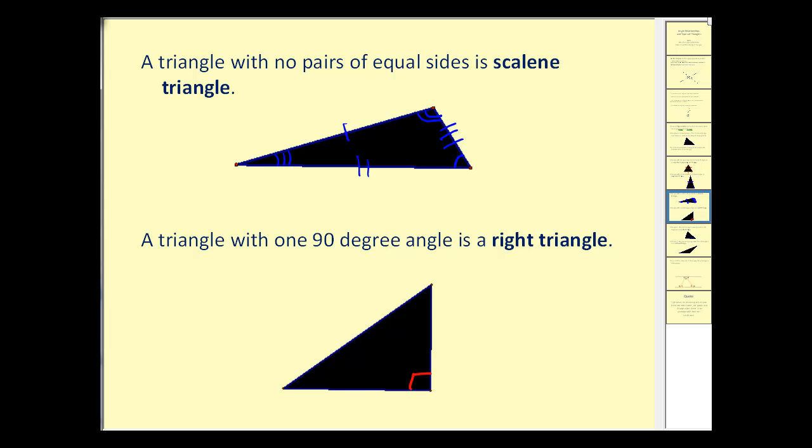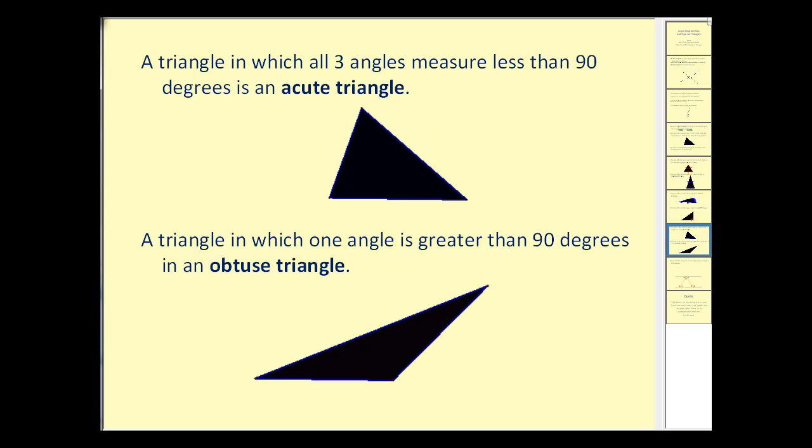A triangle in which all three angles measure less than 90 degrees is called an acute triangle. As we see here, all of these angles are less than 90 degrees.